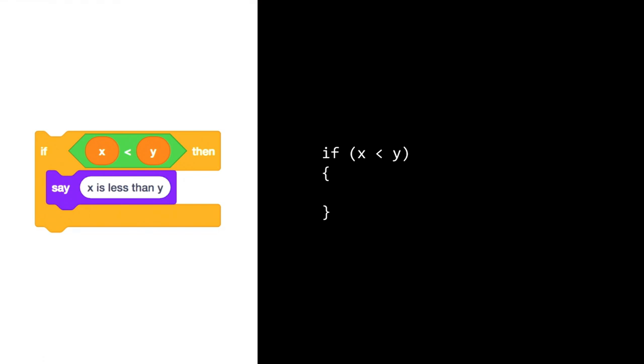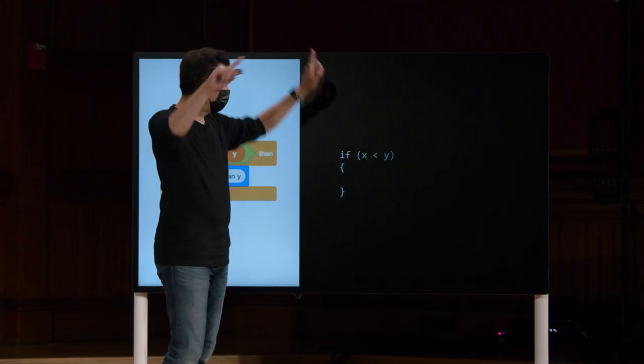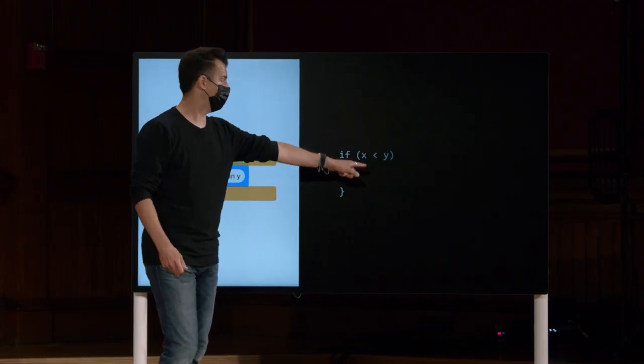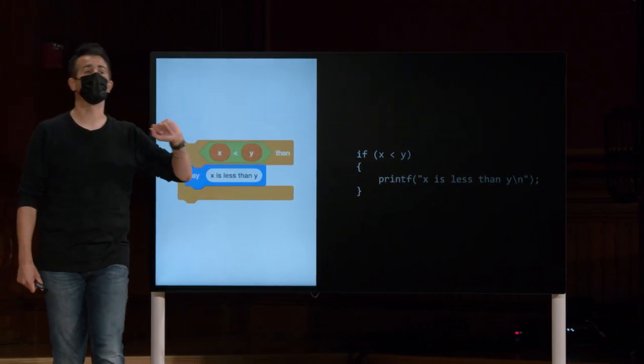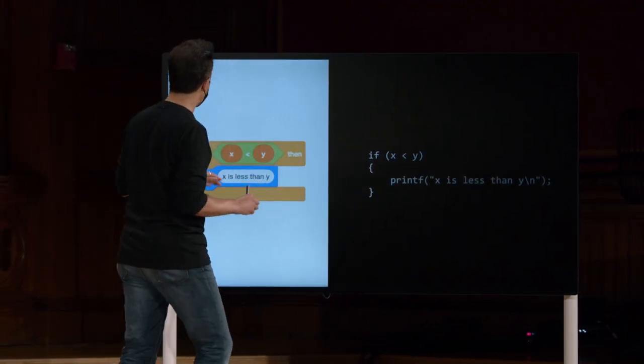É muito mais limpo da esquerda para a direita do que era com o printf join. Assim, temos apenas um código que se parece com isso. Se um espaço, dois parênteses e depois x menos que y. Então, temos algo como printf lá no meio. Então, aqui é realmente um bom mapeamento.